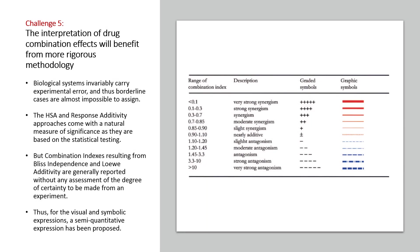An additional problem in interpreting drug combination effects is the quality of the measured data. Biological systems invariably carry experimental error, and thus borderline cases are almost impossible to assign. For example, should we report a combination index of 0.97 as a true and convincing combination effect or as a simple deviation from 1 due to experimental variability? If the 95% confidence interval is 0.95 to 0.99, we can conclude that the combination index is different from 1, whereas if it is 0.85 to 1.05, the drug combination cannot be considered to show any effect deviating from additivity, statistically speaking.